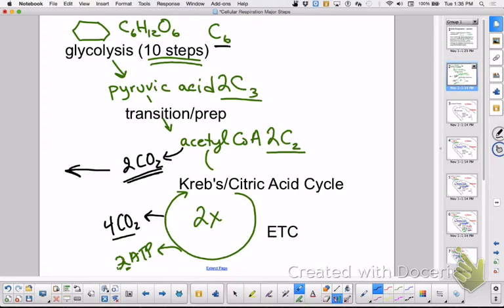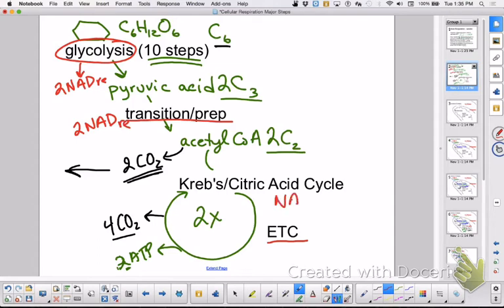Now the electron transport chain is going to use high energy electrons. Where are those coming from? Well, in the process of doing glycolysis you will generate two reduced NADs. When you do transition prep you will generate two more reduced NADs. When you do the Krebs cycle, you are going to make three reduced NADs a turn, so that will be a total of six, and you will make two FAD reduced.